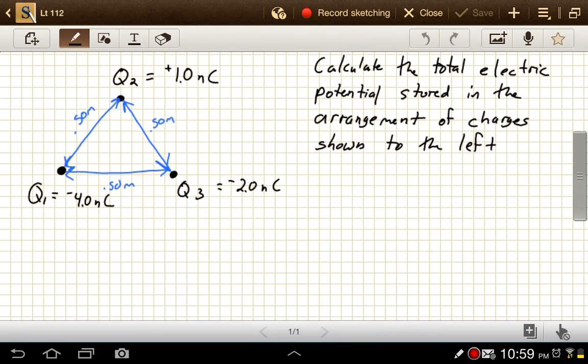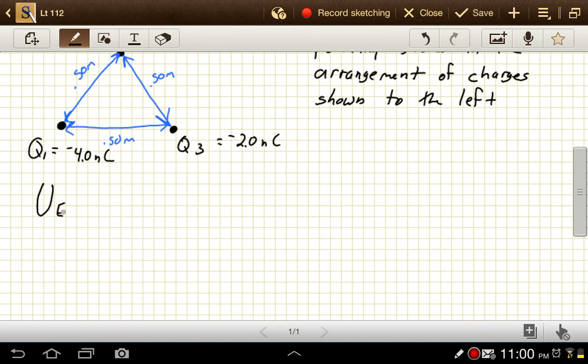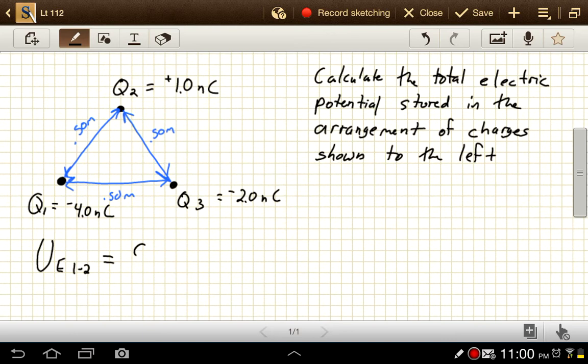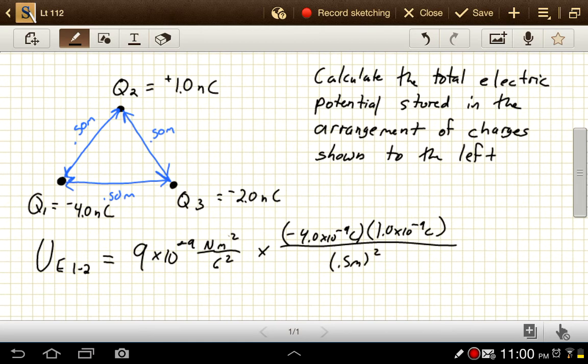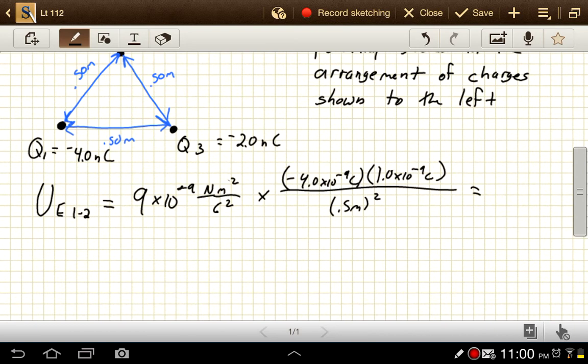So we'll simply calculate each one of those and then add those values together. The electric potential energy between one and two is 9×10^-9 newton meters squared per coulomb squared, times -4.0×10^-9 coulombs times 1.0×10^-9 coulombs, divided by 0.5 squared. That gives us -1.4×10^-7 joules.